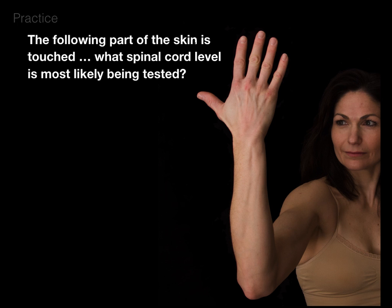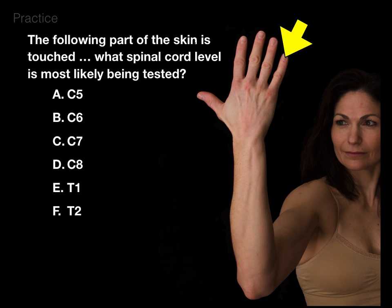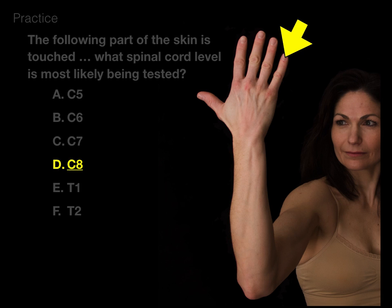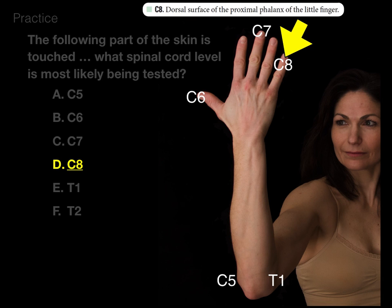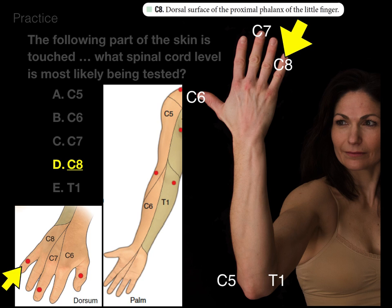Let's do another one. The following part of the skin is touched — what spinal cord level is most likely being tested? It's the back of the pinky. Remembering that thumb is C6, middle finger is C7, that's the pinky — so that's going to be the C8 level. C8 is the dorsum of the proximal phalanx of your pinky.